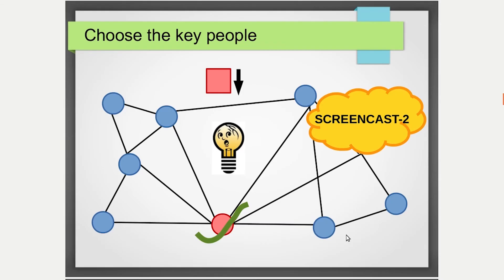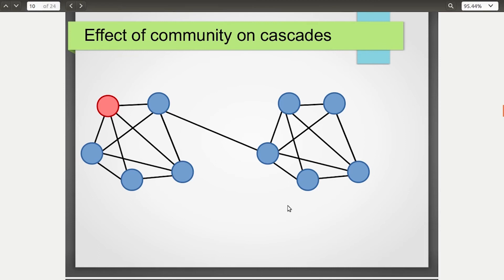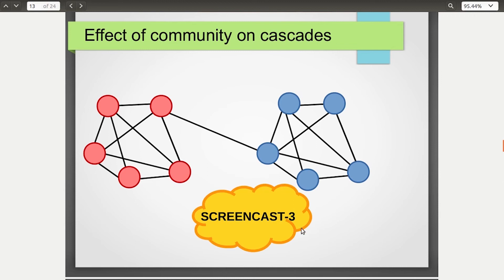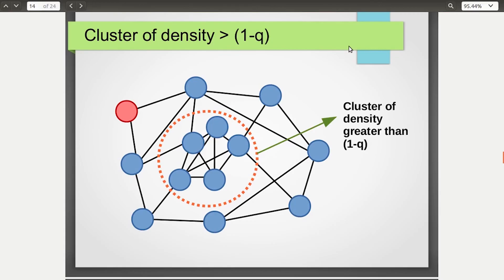In screencast 3 we explore the effect of community on cascades — the idea of community traps. If there are two communities and the idea originates in one community, it cascades through that entire community, but it is difficult for the idea to then diffuse into the second community. So one community remains with the old idea while the other adopts the new one. We'll take a network with two communities, start the cascade from one, and see that it infects everyone there but is unable to reach the other community.